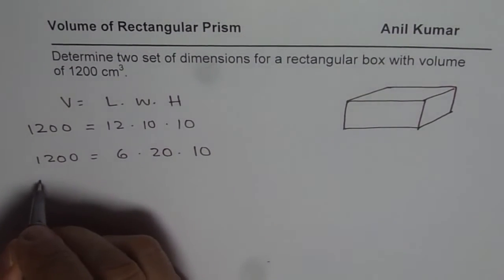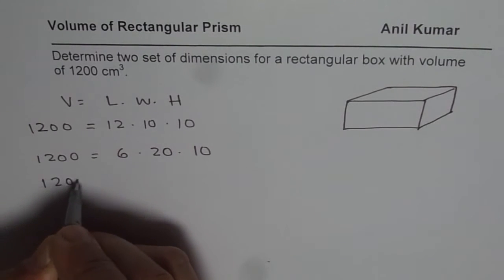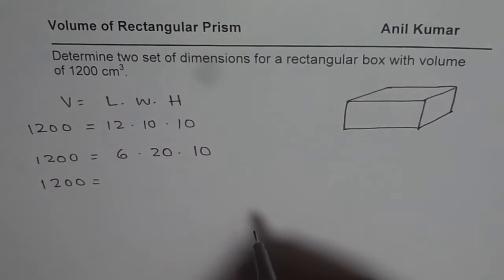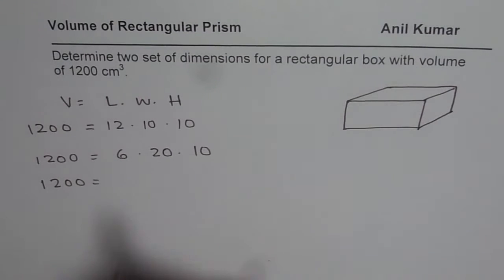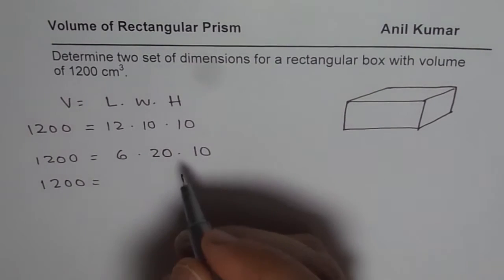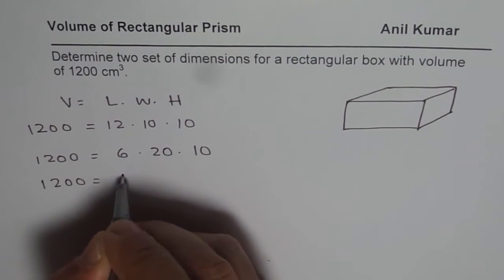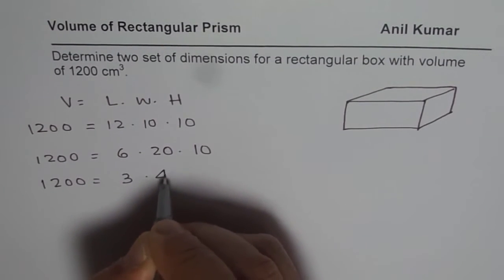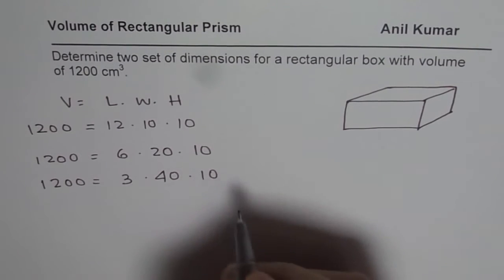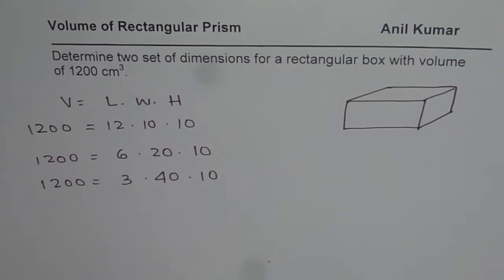We could also write 1200 in many different ways. So likewise, we are going to get different dimensions for the particular box. We could write 12 as 4 times 3. So we could say 3 times 40 times 10. Likewise, we can make so many combinations.